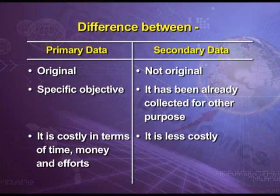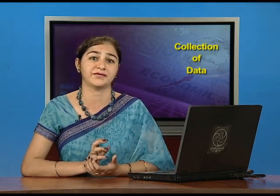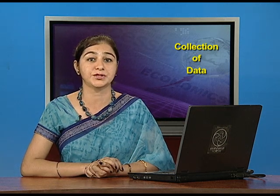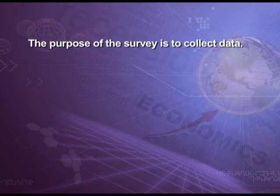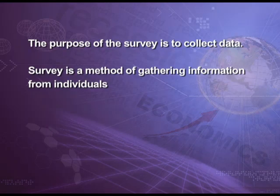After completing primary and secondary data, we will now talk about how data can be collected. Data can basically be collected with an instrument, and that instrument is a questionnaire — one of the most common and important instruments. For example, a manufacturer who wants to introduce a new product, or a political party deciding on a candidate, will conduct a survey by asking questions from a large group of people. The purpose of a survey is to collect data; it is a method of gathering information from individuals.